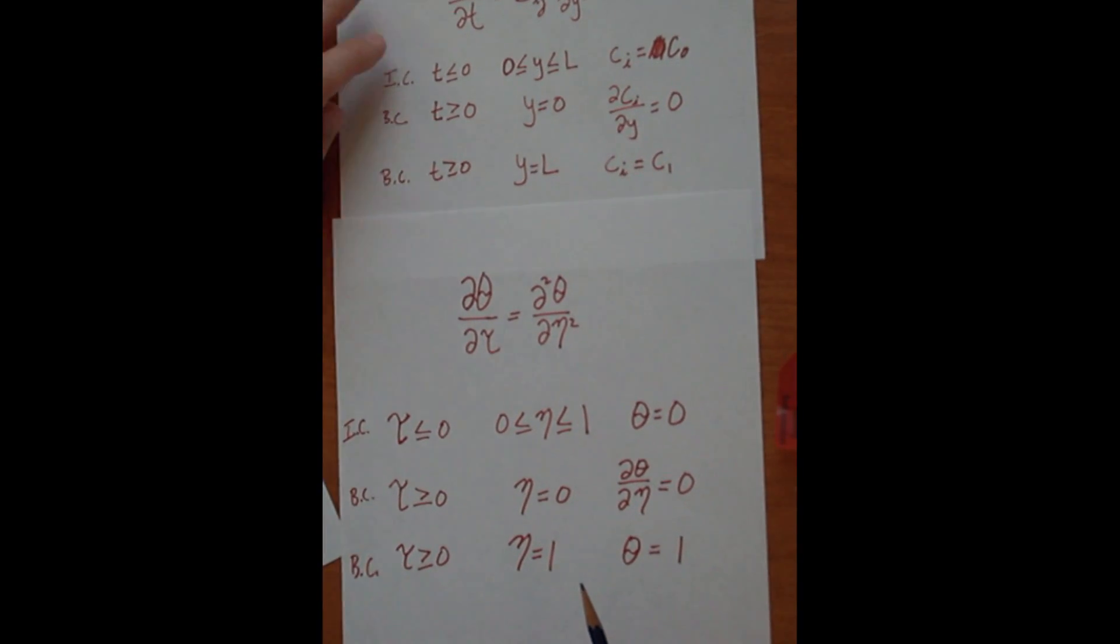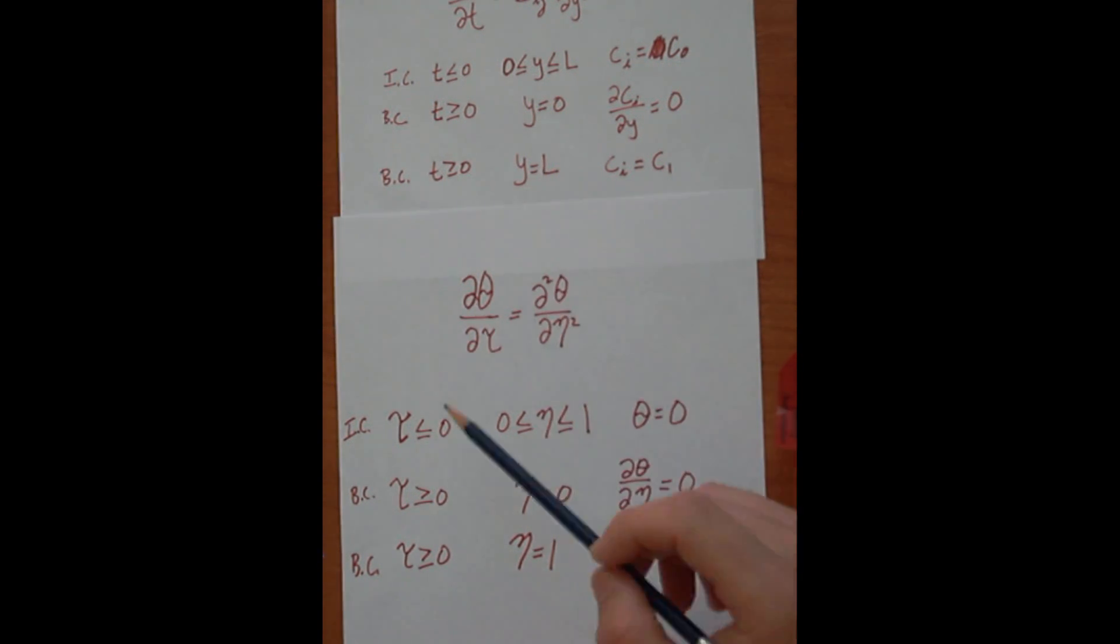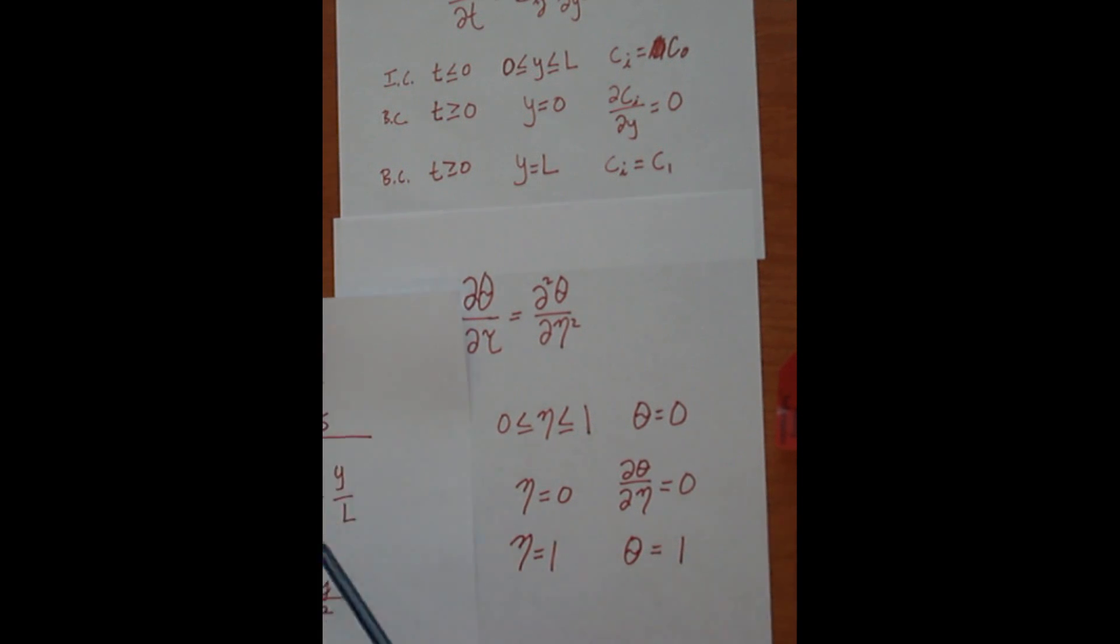And finally, your other boundary condition, since it's at Y equals L, your normalized concentration would be L over L, so that would be equal to one.